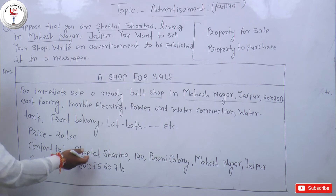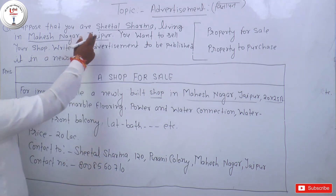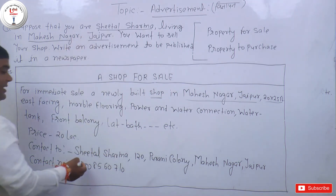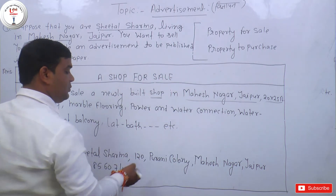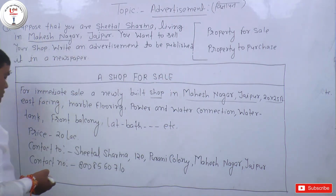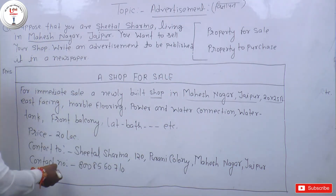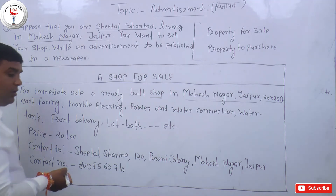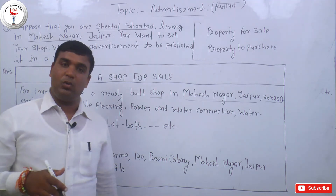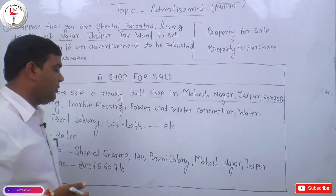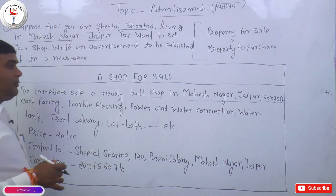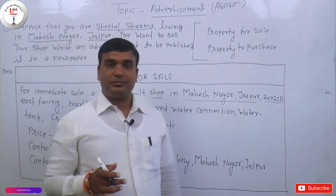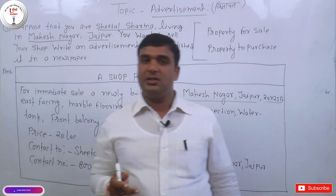Yahan aapko phir address likhna hai jo question mein diya gaya hai — Seetal Sharma, Plot No. 120, Purani Colony, Mahesh Nagar, Jaipur. Aur last mein aapko contact number bhi likhna hai. Is prakar se humne property for sale ke do questions solve kiye hain.